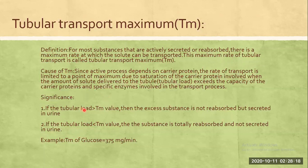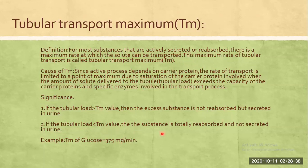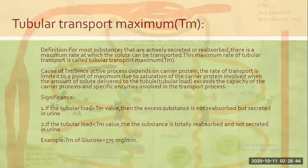The significance is that as a tubular load exceeds the tubular transport maximum, the excess above the tubular transport maximum will be excreted in the urine. If the tubular load is less than the tubular transport maximum, then the substance will be totally reabsorbed. For glucose, the tubular transport maximum is approximately 375 mg per minute.